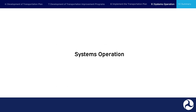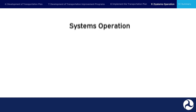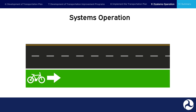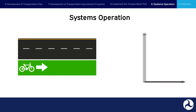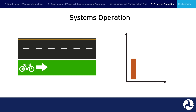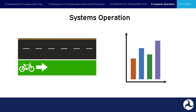Systems Operation. The final step is systems operation. Once construction is complete, a project becomes an operable element of the transportation system. Ongoing monitoring and evaluation of the transportation system informs future planning work. As projects are built that improve safety, reduce travel time and congestion, and provide more multimodal options, travel patterns change, and these can be identified and assessed in planning for continual improvement of the transportation system.